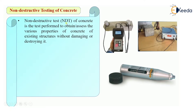In the previous videos or previous chapters we have seen various properties of concrete — fresh concrete as well as hard concrete. Fresh concrete will have properties such as workability, bleeding, and segregation. Hard concrete will have compressive strength, tensile strength, and flexural strength. To find out those strength or those properties of concrete, we had to damage or destroy the concrete.